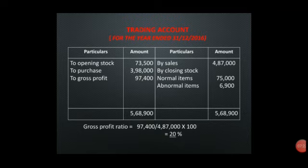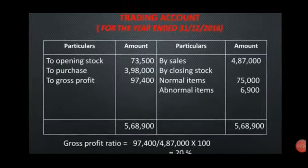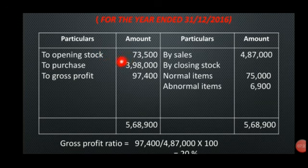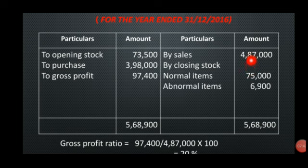We are going to prepare the trading account for the year ended 31st December 2016. The opening stock is 70,000. The purchases are 90,000. The sales are 40,000. The closing stock is 50,000. Normal items are 25,000 and abnormal items are 3,000, which are separate.